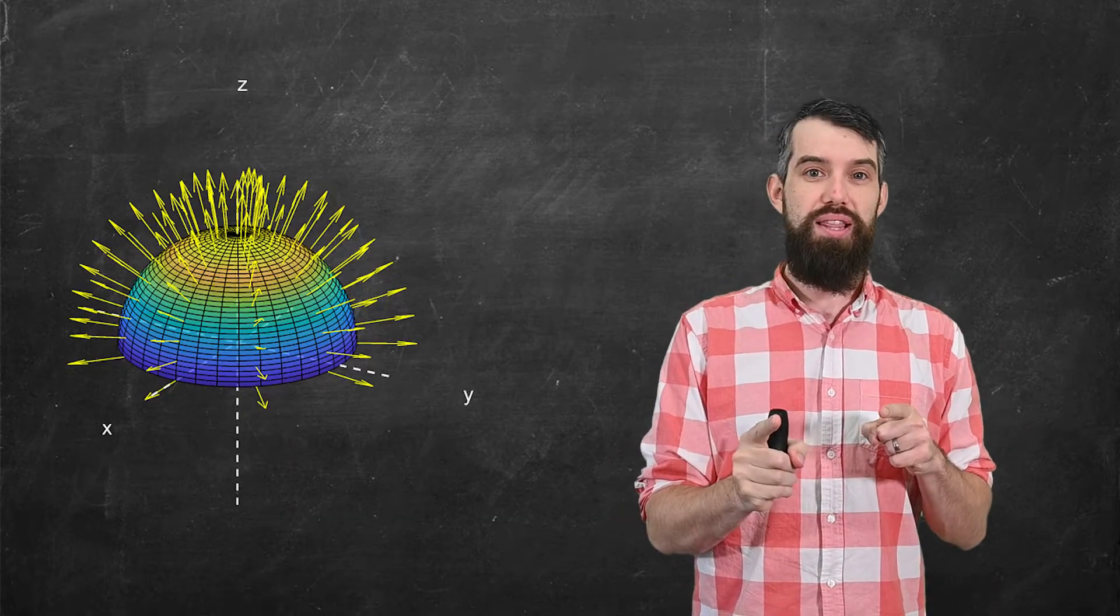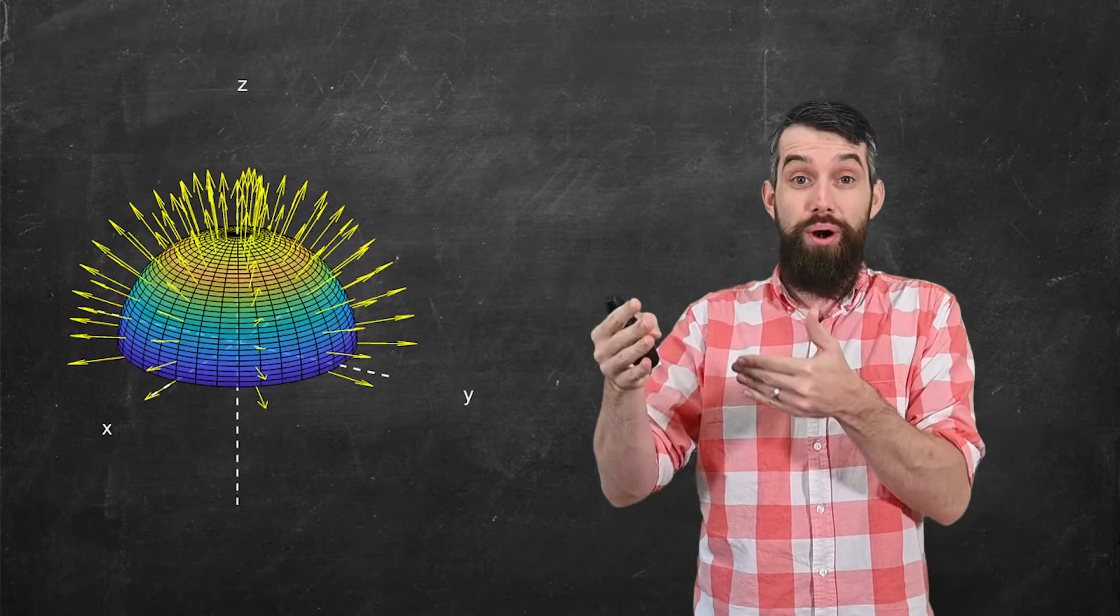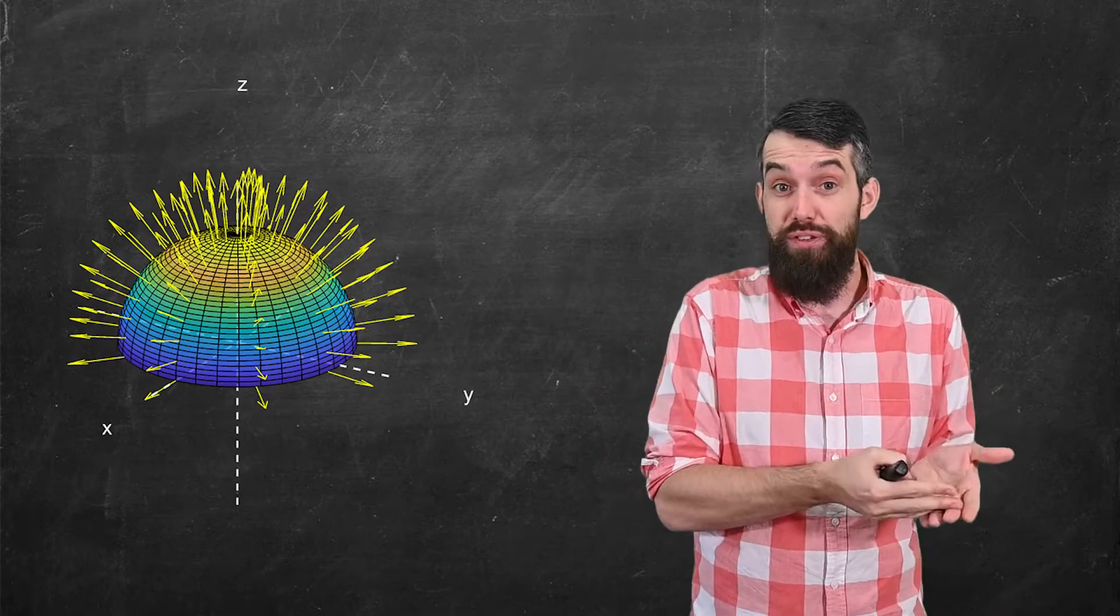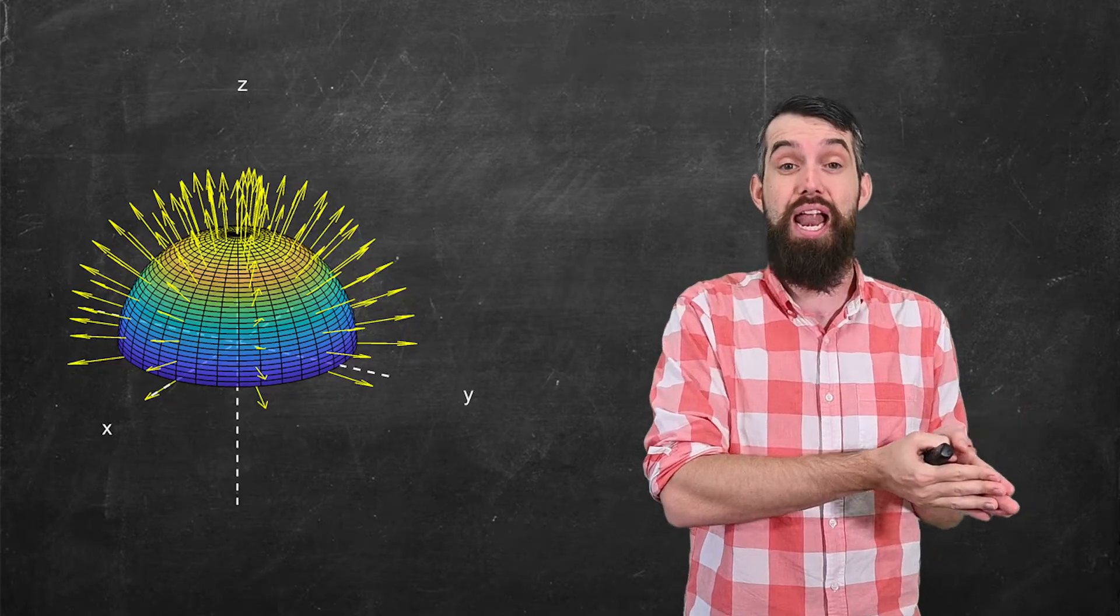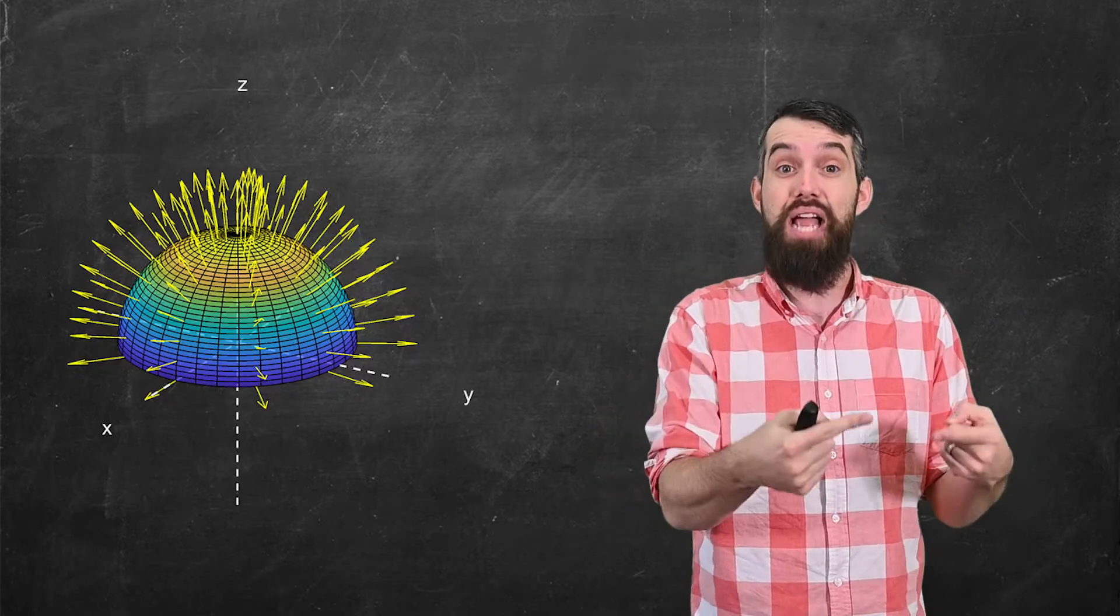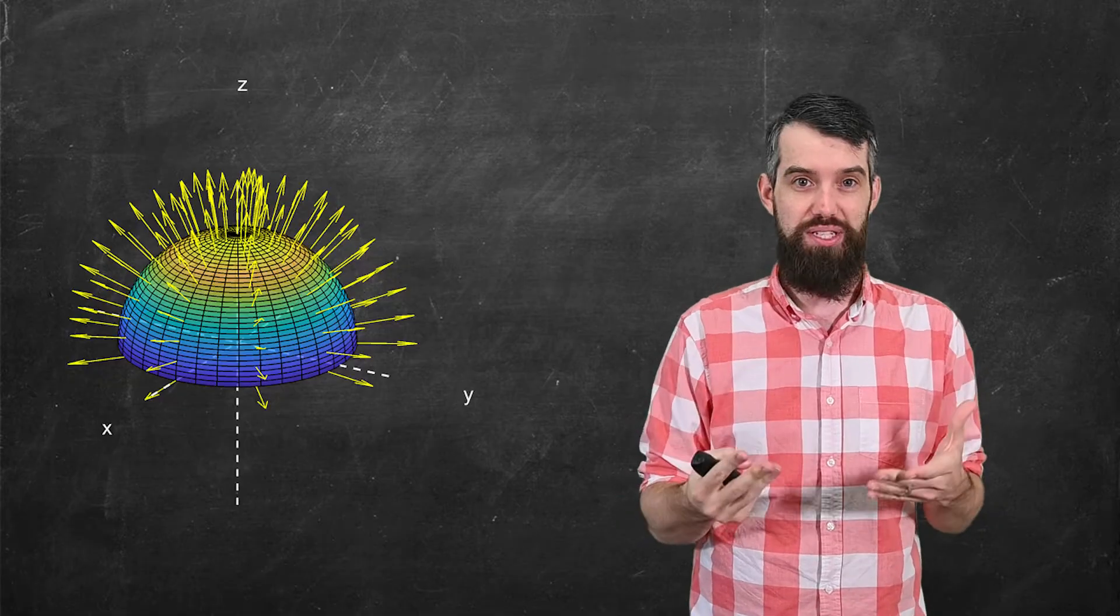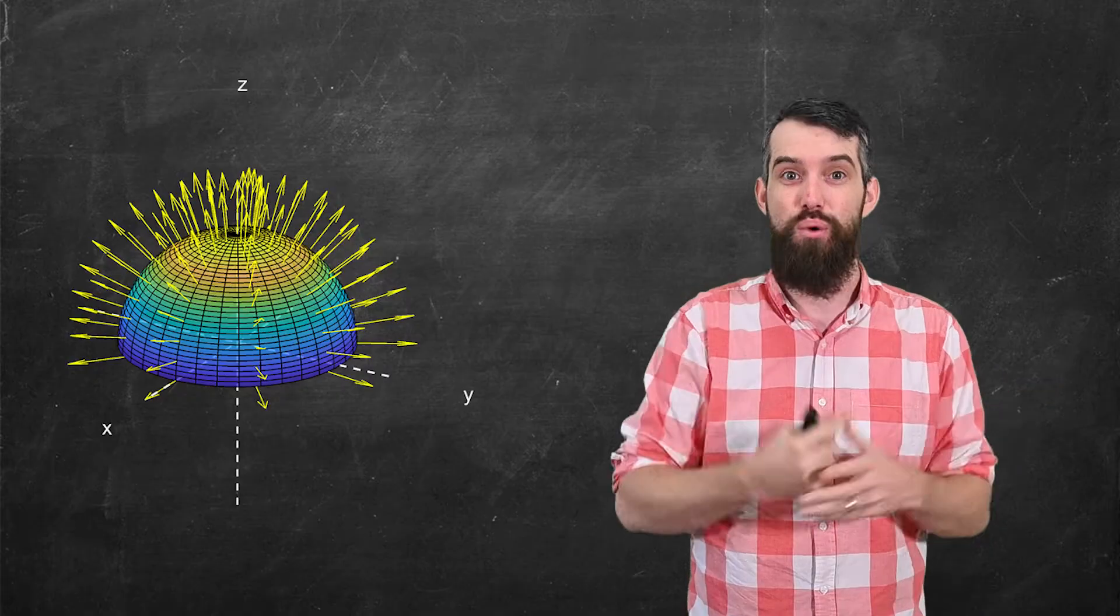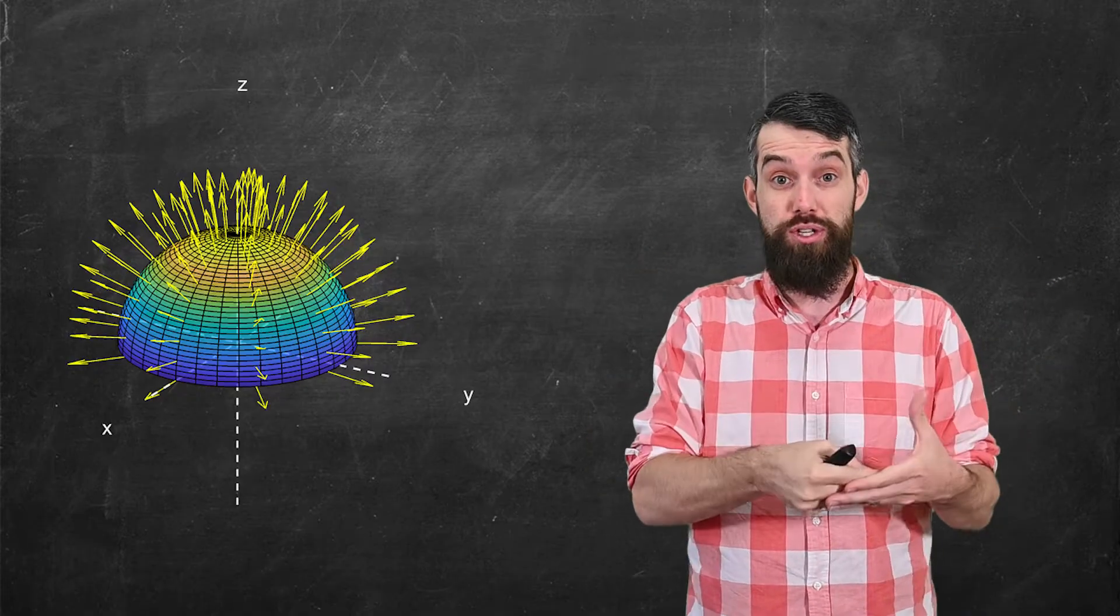Now what's key here is that this surface is what we've called orientable in our previous video. And because it's an orientable surface, which means there's two different sides that I can continuously assign these normal vectors to, I have to make a choice. And so I've made this choice where the vectors are all going out from the origin as opposed to all going inwards towards the origin.